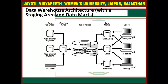The third type of data warehouse architecture includes a staging area and data marts. Although this architecture is quite common, you may want to customize your warehouse architecture for different groups within your organization. You can do this by adding data marts, which are systems designed for a particular line of business. This figure illustrates an example where purchasing, sales, and inventories are separated. A financial analyst might want to analyze historical data of purchases and sales.